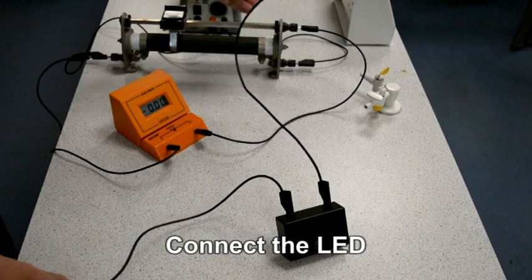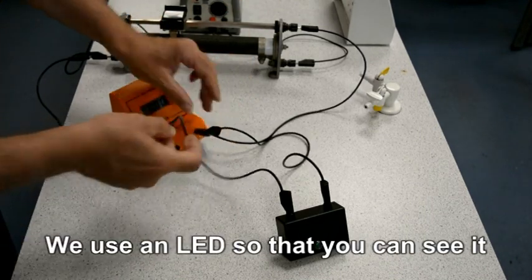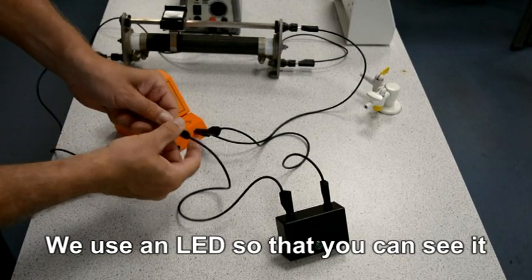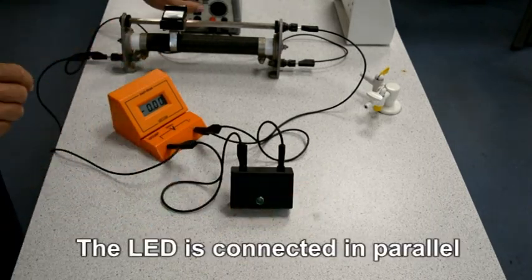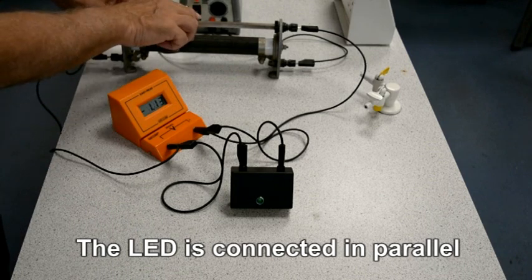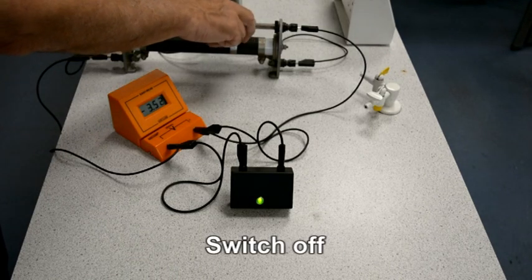Now we're going to connect the light emitting diode. That's just like a normal diode but you can see it actually working. The LED is going to be in parallel with the voltmeter. Again turn on, check to see if it's working, and turn off again.